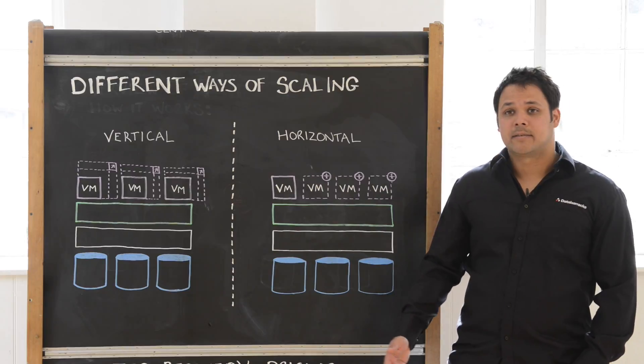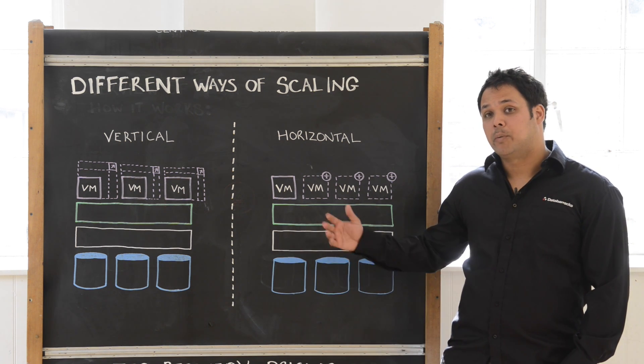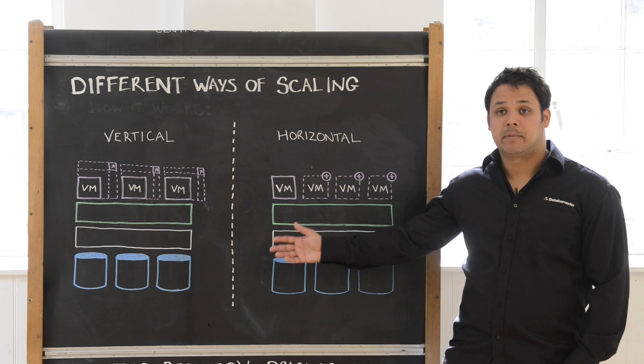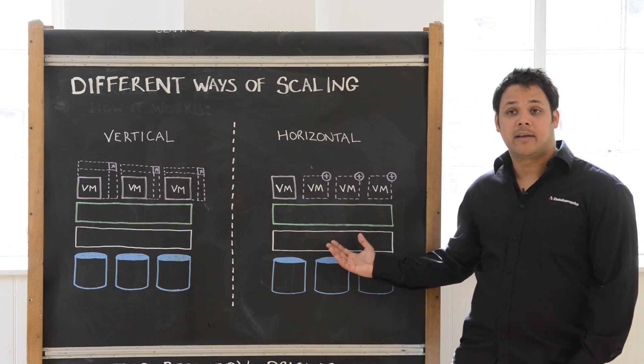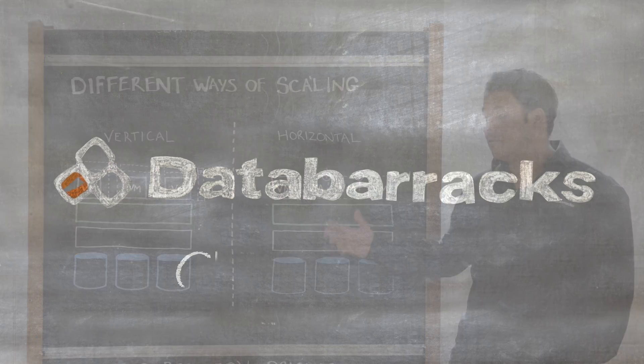To summarize different ways of scaling in the cloud: vertically is definitely the more traditional way applications have been developed in the past. Horizontal is the new way applications are being built now so they can scale resiliently within cloud computing.